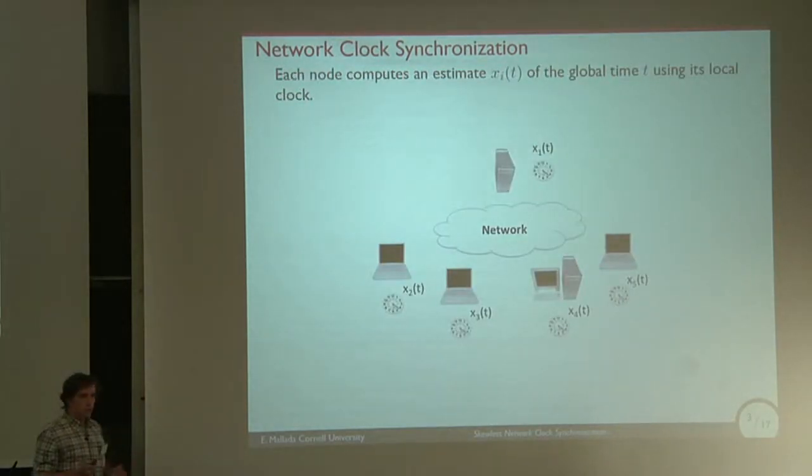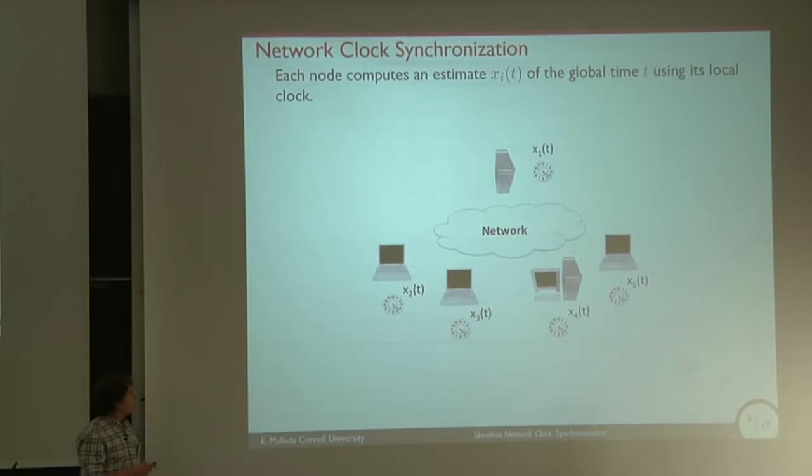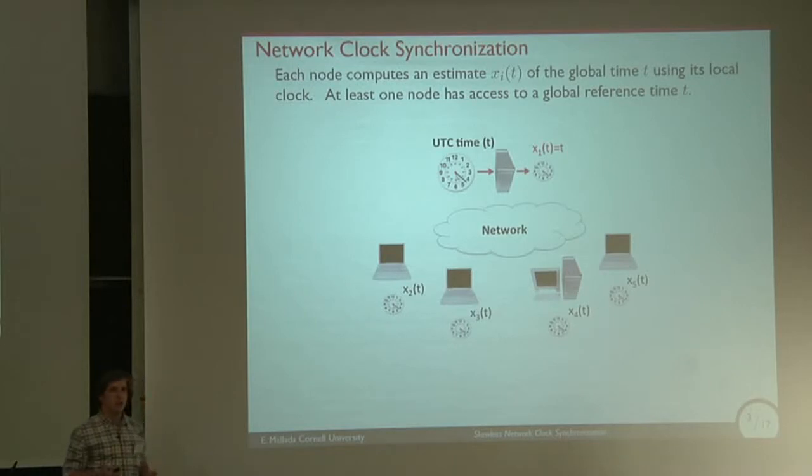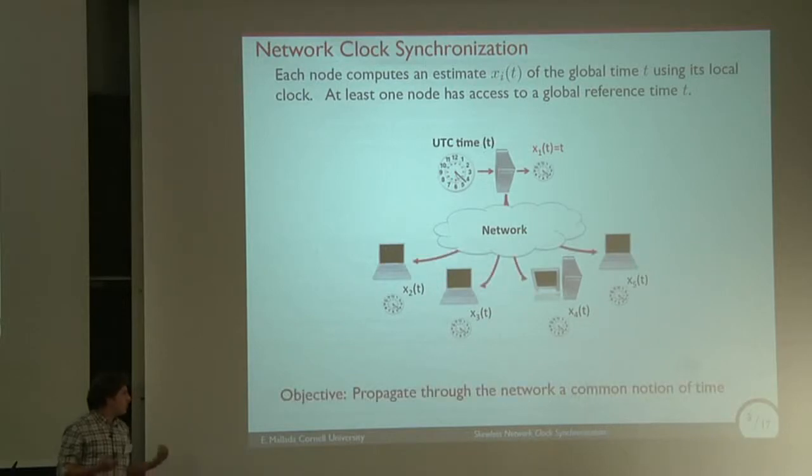The problem formulation is quite simple. You have a network and several nodes. Each of these nodes has its own estimate of this global time. Usually there's at least one node that has some access to this global reference of time, which sometimes is the UTC, Universal Coordinated Time. The objective is to propagate through the network this notion of global reference of time, such that each individual computer can correct its local estimation to be equal to this global reference T.